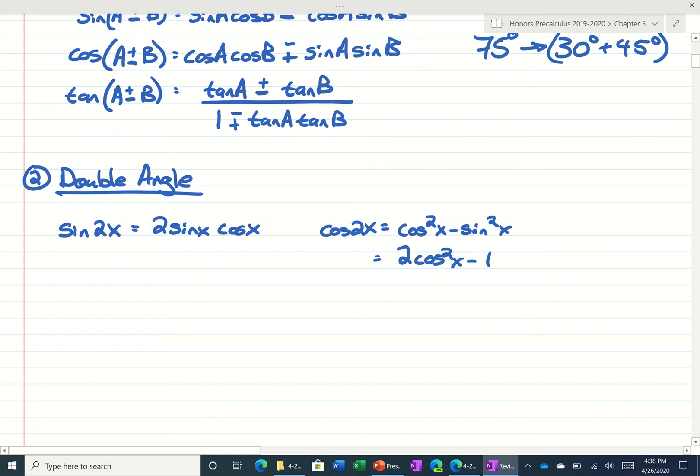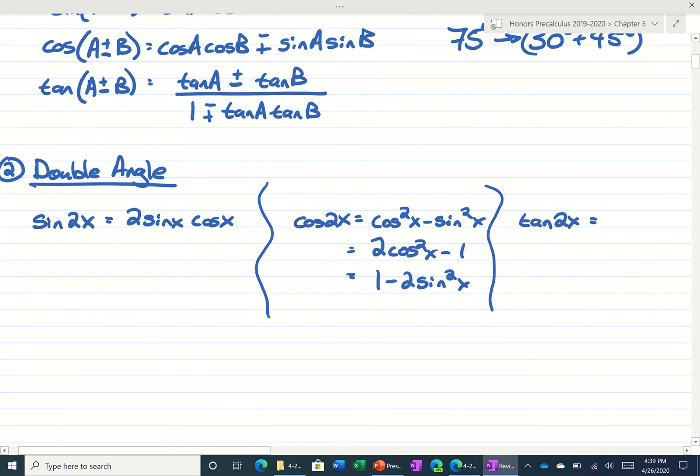2 cosine squared of x minus 1. And the third formula we could use is 1 minus 2 sine squared of x. And then for the tangent of a double angle, we could use 2 times the tangent of x over 1 minus tangent squared of x.